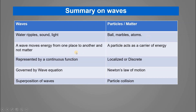The wave is a continuous function — sine or cosine — that's how we represent it. Particles, on the other hand, are described by a finite, localized, discrete function. For waves we use wave equations, and for particles we use Newton's laws of motion to predict their trajectory.